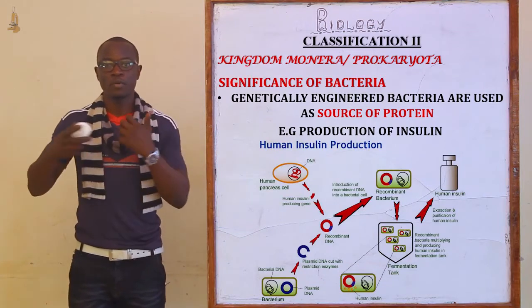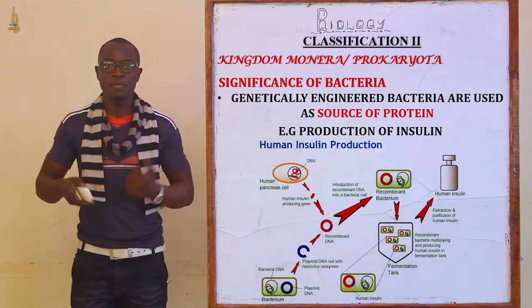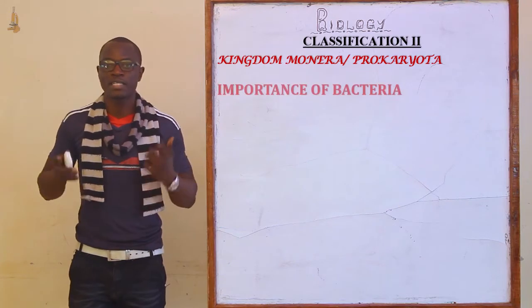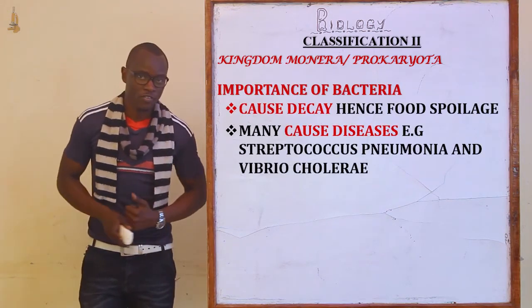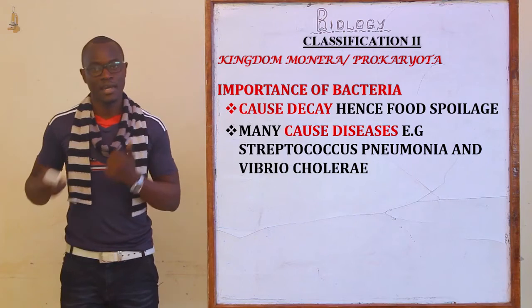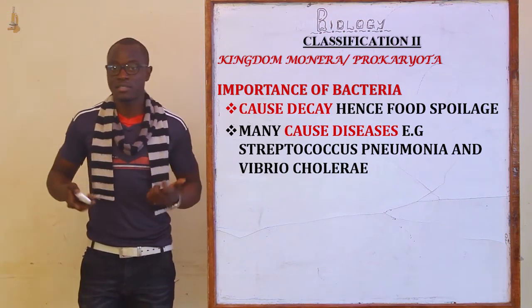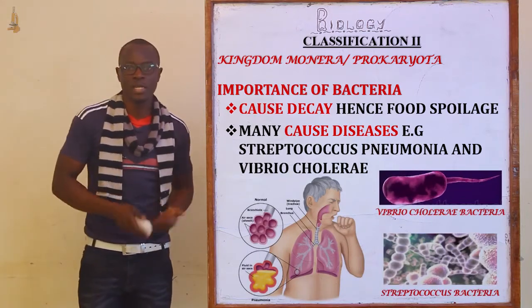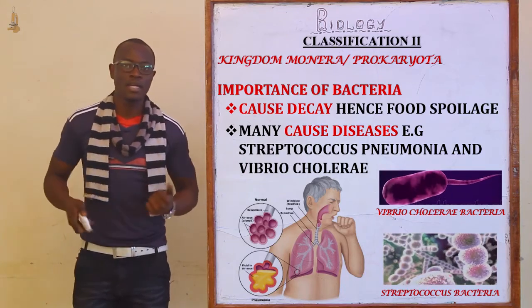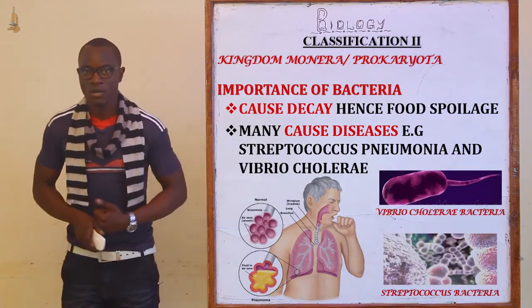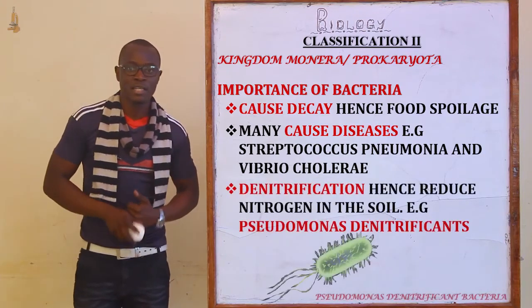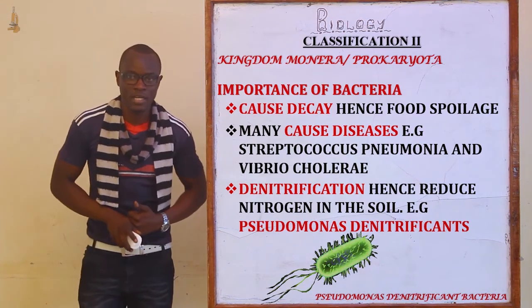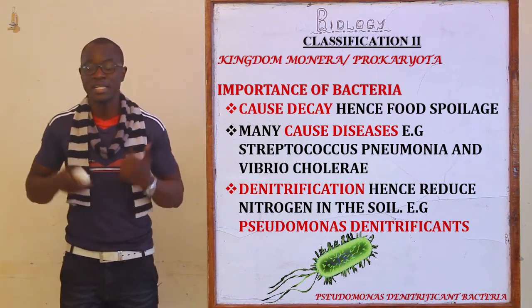For example, genetically engineered bacteria are used in the production of insulin for people suffering from diabetes mellitus. On the other hand, bacteria also cause decay, hence food spoilage, and they mainly cause diseases — for example, Streptococcus pneumoniae causes pneumonia, and Vibrio cholerae causes cholera. They also facilitate the denitrification process, hence reducing nitrogen from the atmosphere — for example, Pseudomonas denitrificans bacteria.